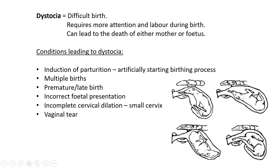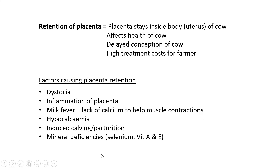Further causes of dystocia include incomplete cervical dilation — if the cervix is not relaxing and not opening wide enough to form an adequate birth canal, this creates difficulty for both the calf and mother. Also, a vaginal tear during birth — a tear on the inside of the reproductive tract can allow fat or other material in, causing infection, which is not good for the cow.